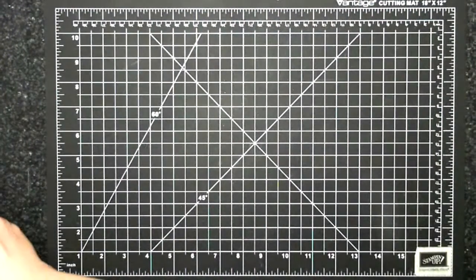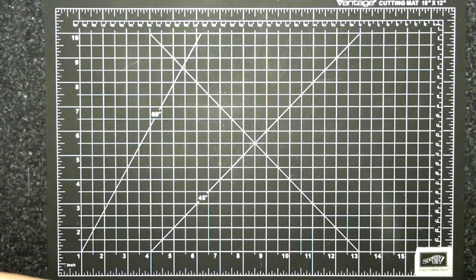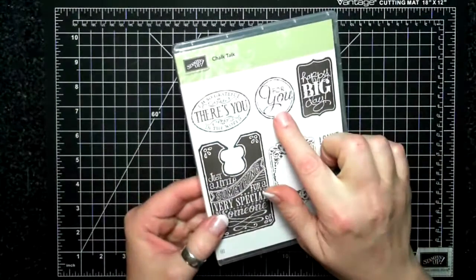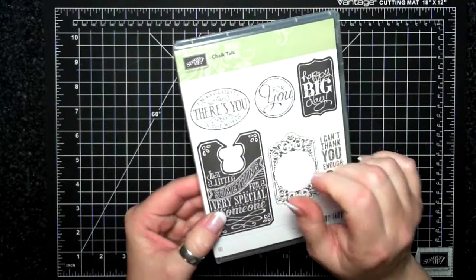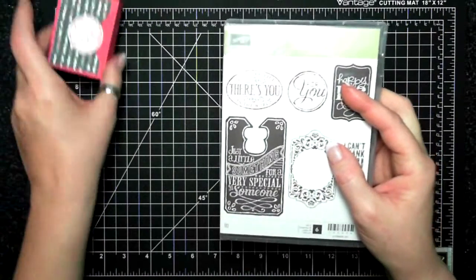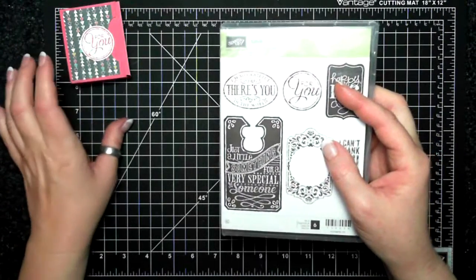So I'm going to show you how to make it. I used for the sentiment the Chalk Talk 'for you' and I don't actually have a punch that punches that out very nicely so I had to fussy cut a circle.